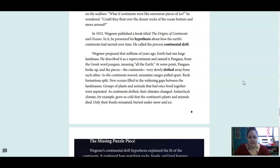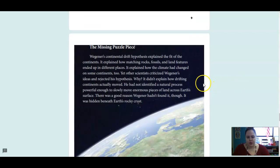Wegener proposed that millions of years ago, Earth had one huge landmass. He described it as a supercontinent and named it Pangea, from the Greek word Pangea, meaning all the Earth. At some point, Pangea broke up and the pieces, or the continents, very slowly drifted away from one another. As the continents moved, mountain ranges pulled apart. Rock formations split, new oceans filled in the widening gaps between the landmasses. Groups of plants and animals that had once lived together were separated. As the continents drifted, their climates changed. Antarctica's climate, for example, grew so cold that the continents' plants and animals died. Only their fossils remained, buried under snow and ice.